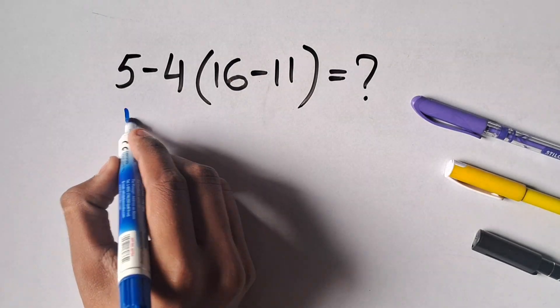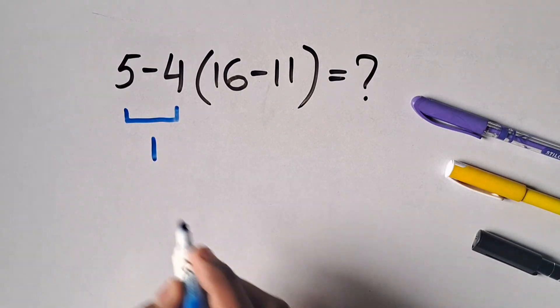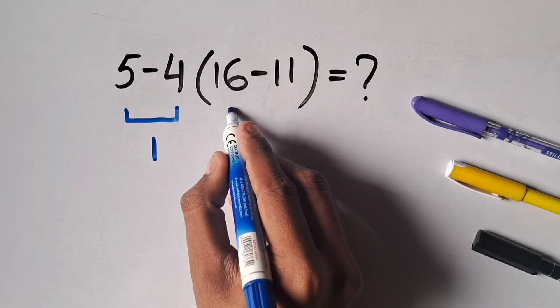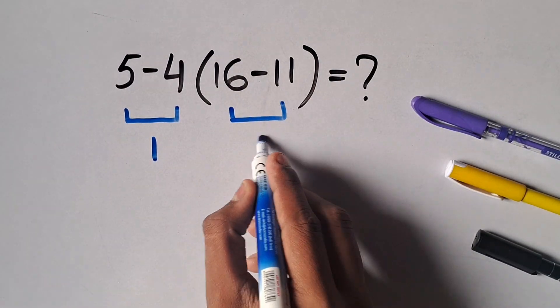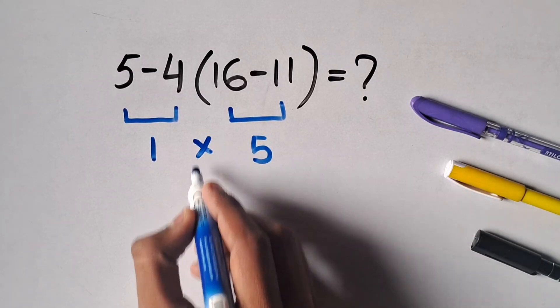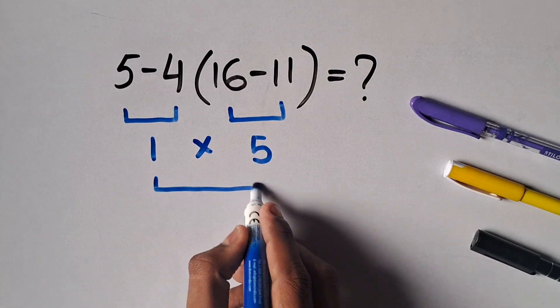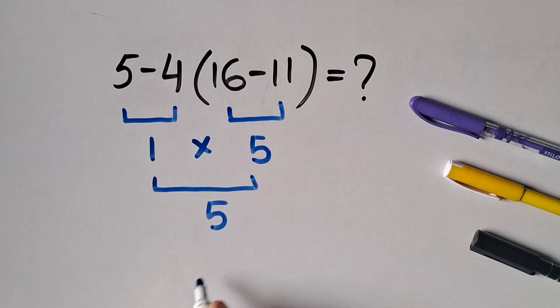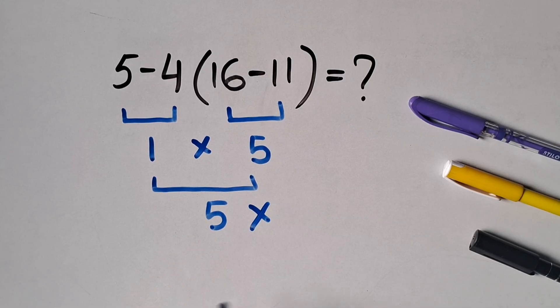5 minus 4 equals 1 and 16 minus 11 equals 5, so 1 times 5 equals 5. But 5 is not the correct answer for the expression.